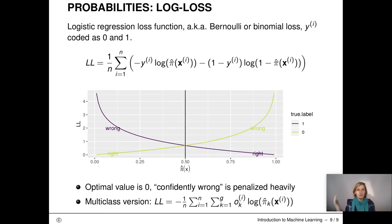Okay, so our final measure we look at in this unit is the log loss. This is the loss we already know from logistic regression. It is also called Bernoulli loss or binomial loss. The optimal value of the loss is zero. The more wrong the predicted probability, the stronger it is penalized in log loss. Much stronger, for example, than in the Brier score. Again, there is a multi-class version of the log loss, which uses the indicator function O, which is one if the ith observation is of class k and zero otherwise.